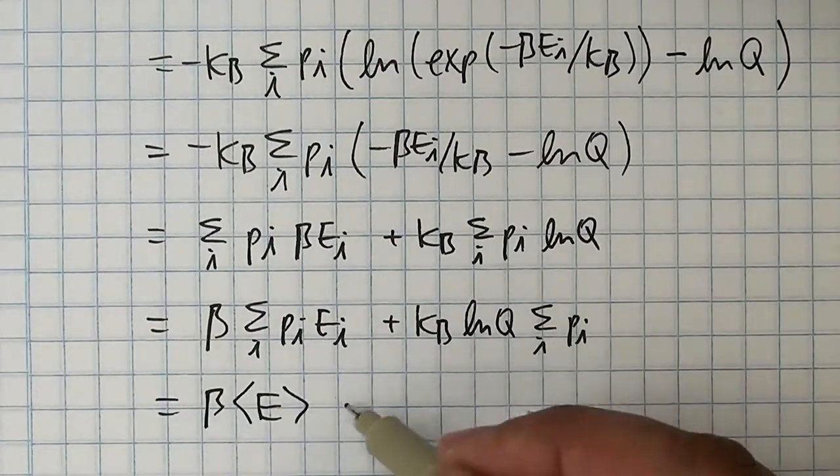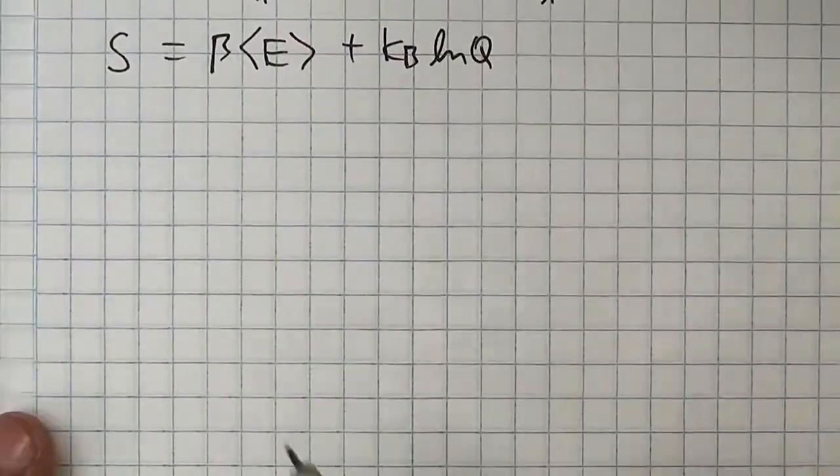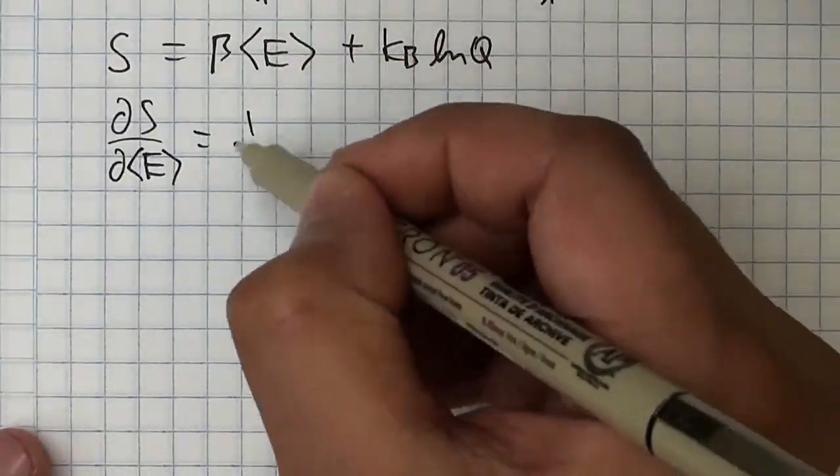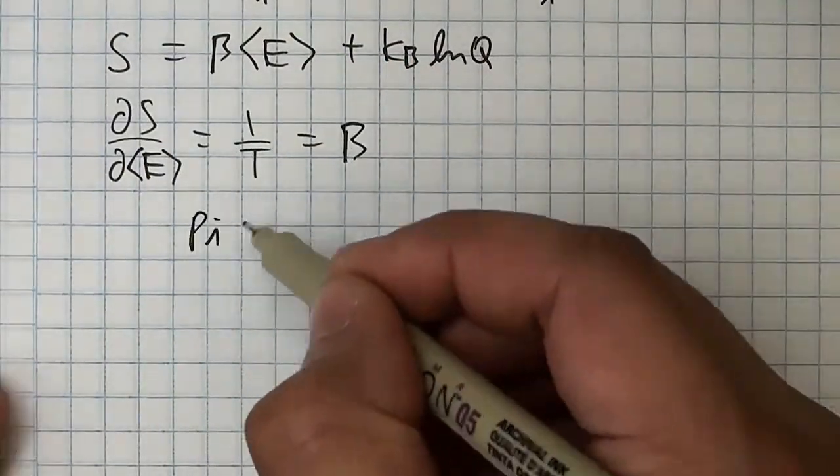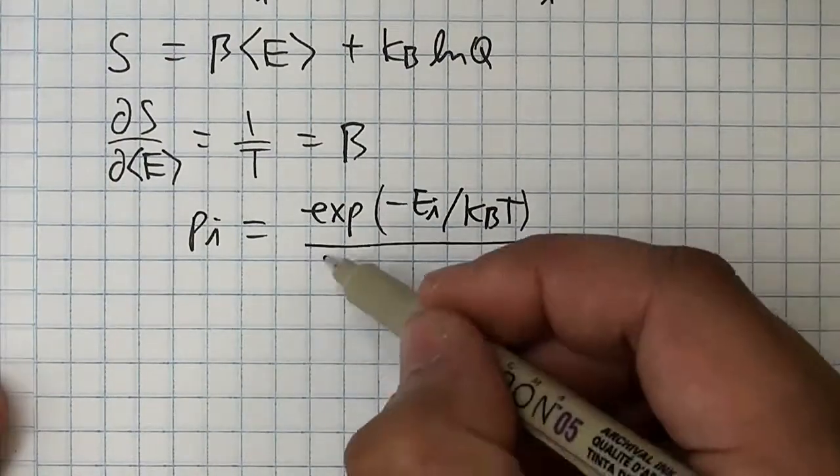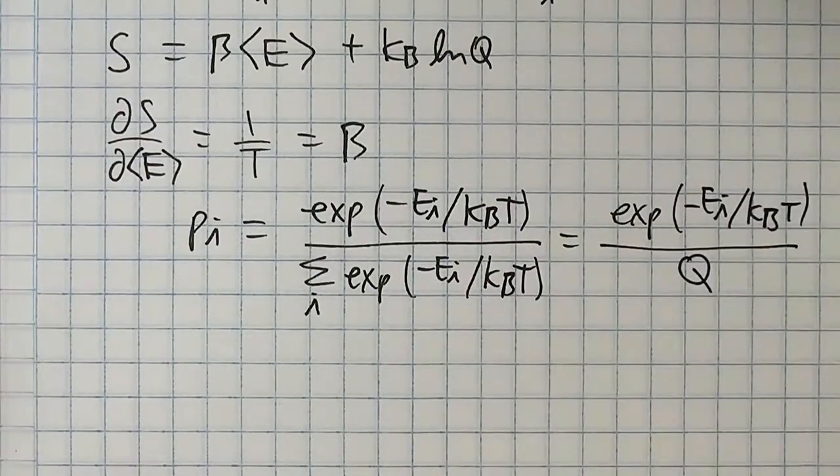But note that log q is the result of summing all the ei, and so it's a constant with respect to this sum. This gives us a nice and simple form for the entropy, which makes it easy to relate beta to temperature. Now we can substitute the Lagrange multiplier beta for its true form, 1 over T, and that's it!